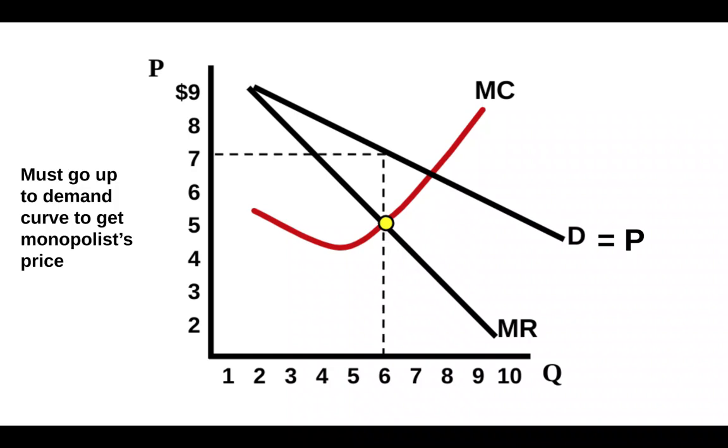Now we have to be very careful with price. A lot of students want to go straight over from the yellow dot all the way over and say the price is five. This is actually the price in perfect competition. But remember, marginal revenue is no longer equal to price. So in order to get the monopolist price, we have to go from MR equals MC up to the demand curve. And so the price is $7.